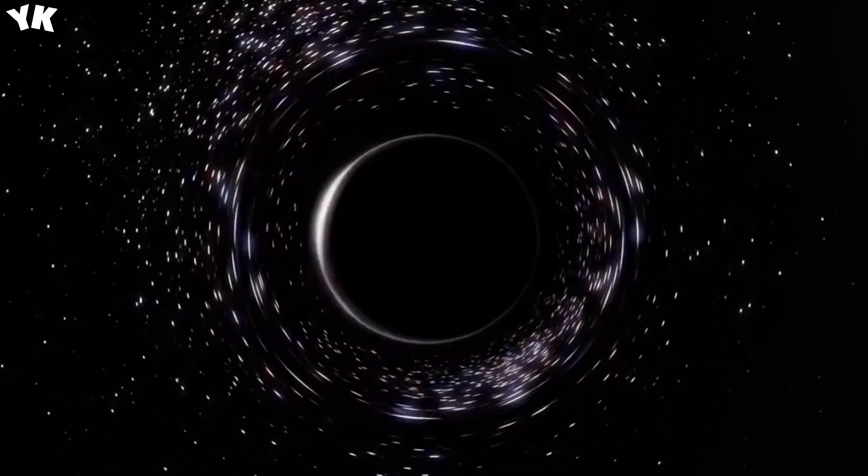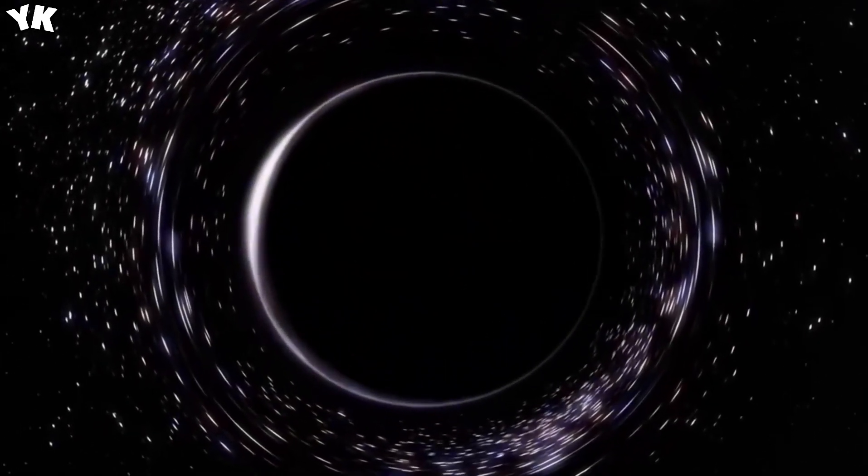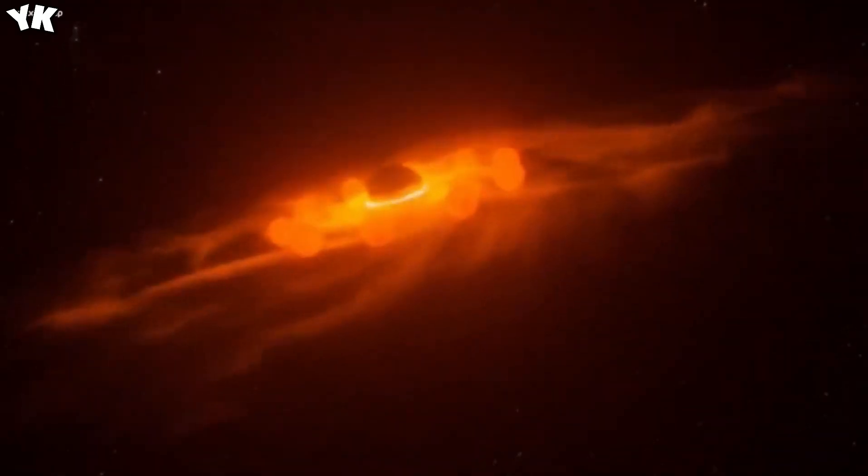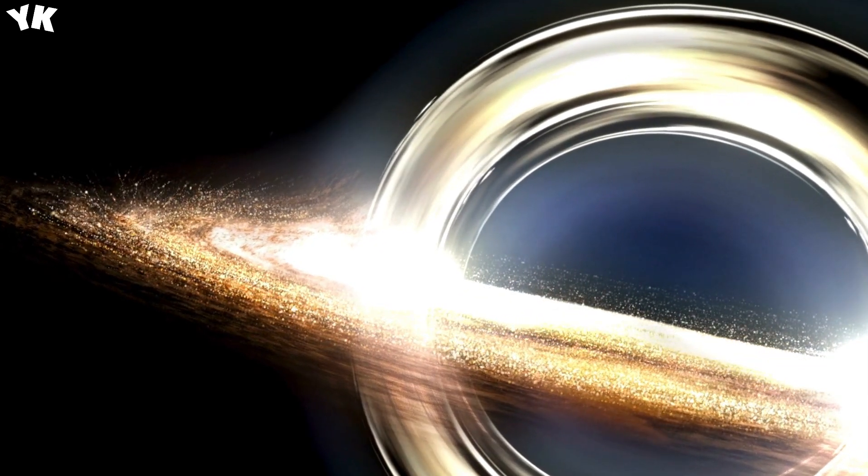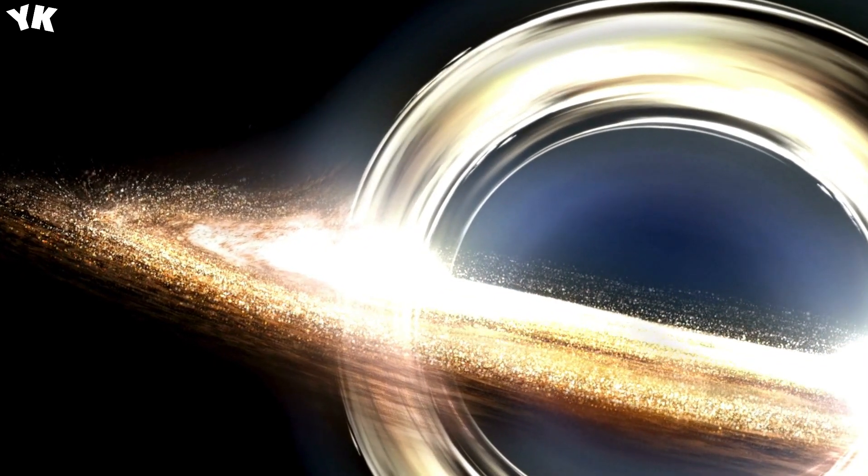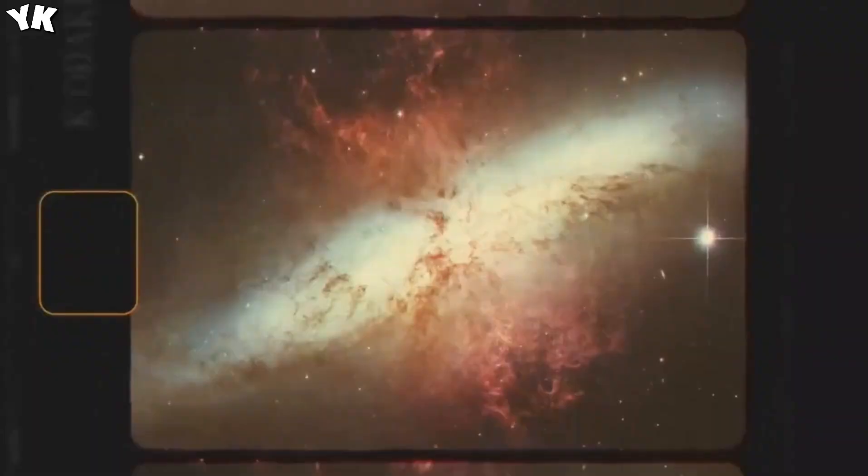Moving inward, the photon sphere constitutes the second layer, where light orbits the black hole in perpetual captivity. Any photons that dare to venture into this realm succumb to the overwhelming gravitational pull, forever imprisoned within the cosmic embrace of the black hole.